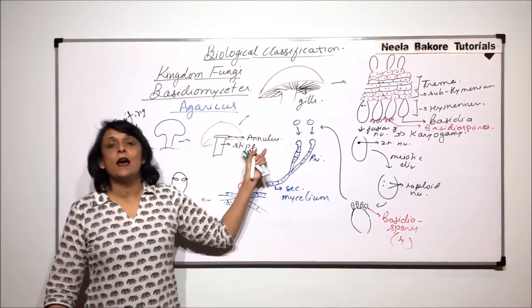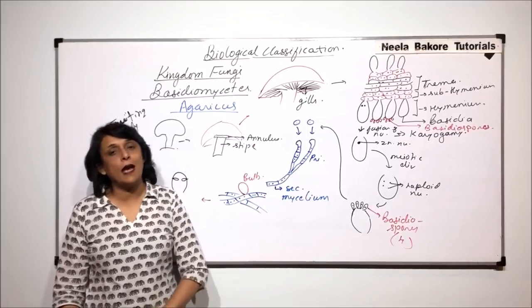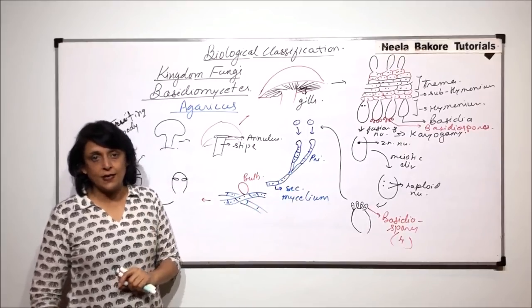When the spores germinate, half of them will produce positive strain mycelia and half of them will have negative strain mycelia.